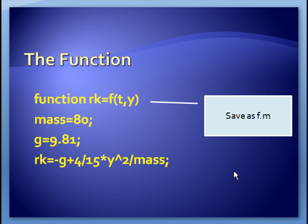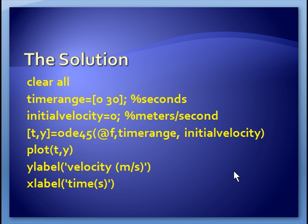So now how do we call this? Well, here's a script that would call it. So I set up the time range. In this case, I'm going from 0 to 30 seconds. So the time range is a vector with the first number being the starting time and the second number being the finishing time. So I tell MATLAB to solve this for 30 seconds. I set up the initial velocity. In this case, 0. The paratrooper is assumed to be static at t equals 0.